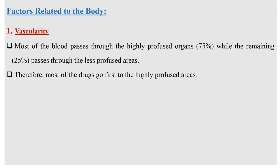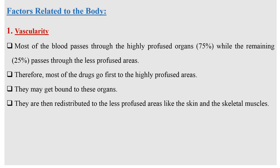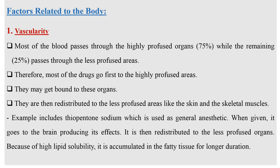The first important factor related to the body is vascularity. Most drugs pass through highly perfused organs — about 75% — while the remaining 25% passes through less perfused areas. Therefore, most drugs go first to highly perfused areas, may get bound to these organs, and are then redistributed to less perfused areas like skin and skeletal muscles. For example, thiopentone sodium, used as a general anesthetic, goes to the brain producing its effects, then is redistributed; due to high lipid solubility, it accumulates in fatty tissue for longer duration.